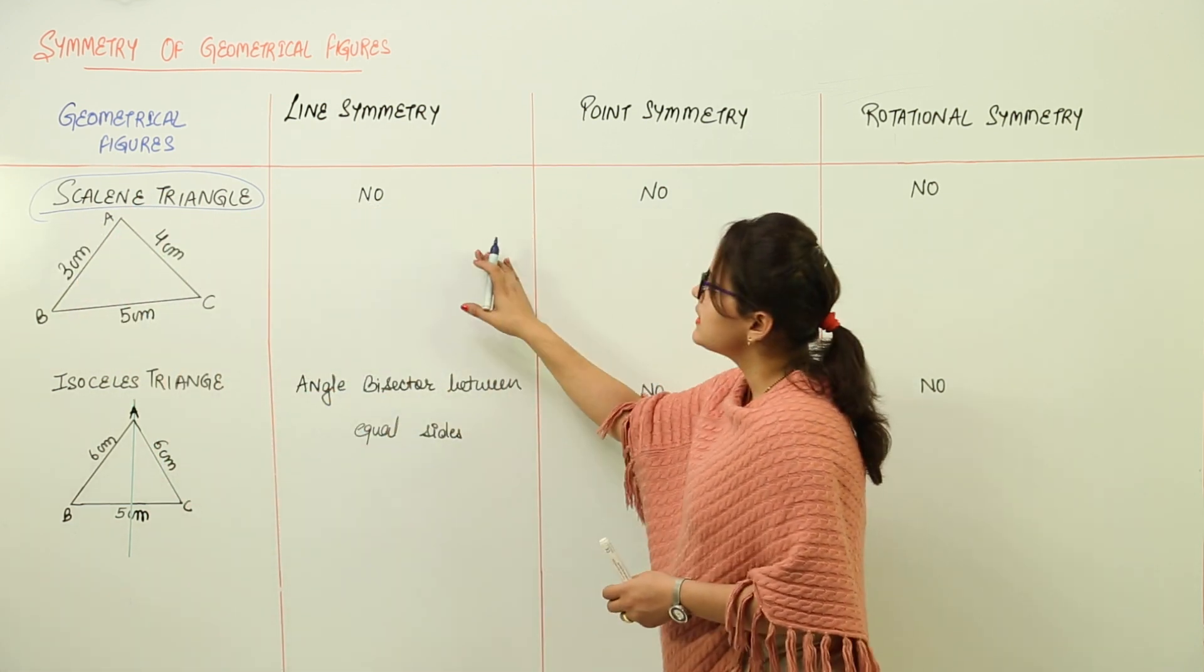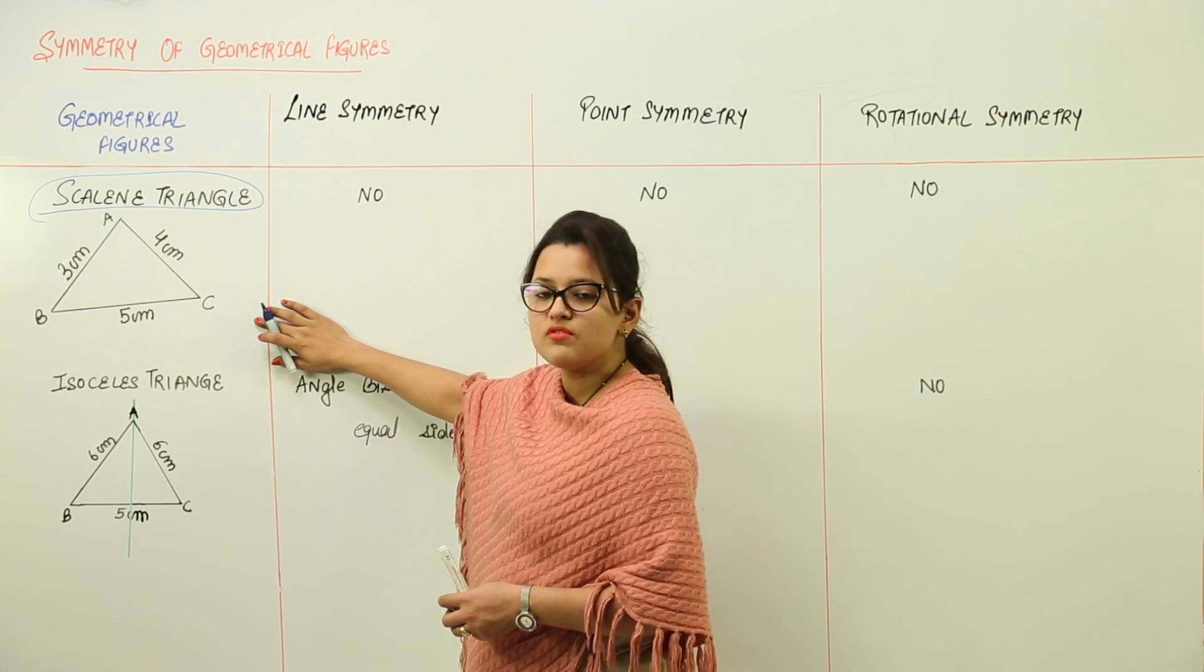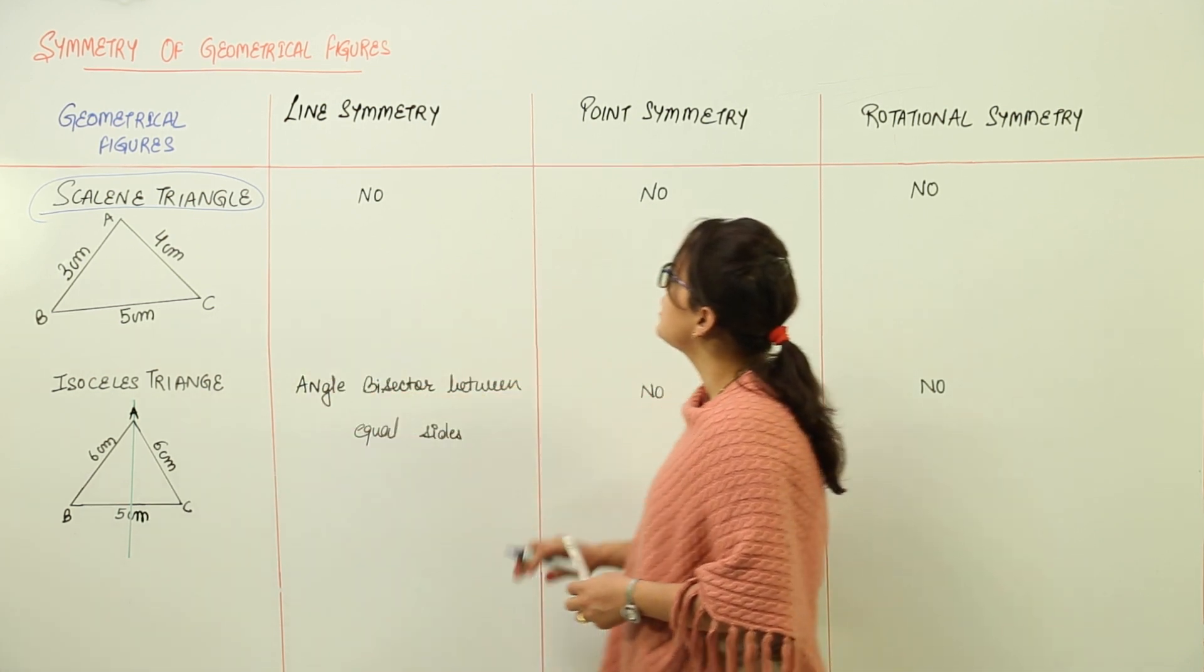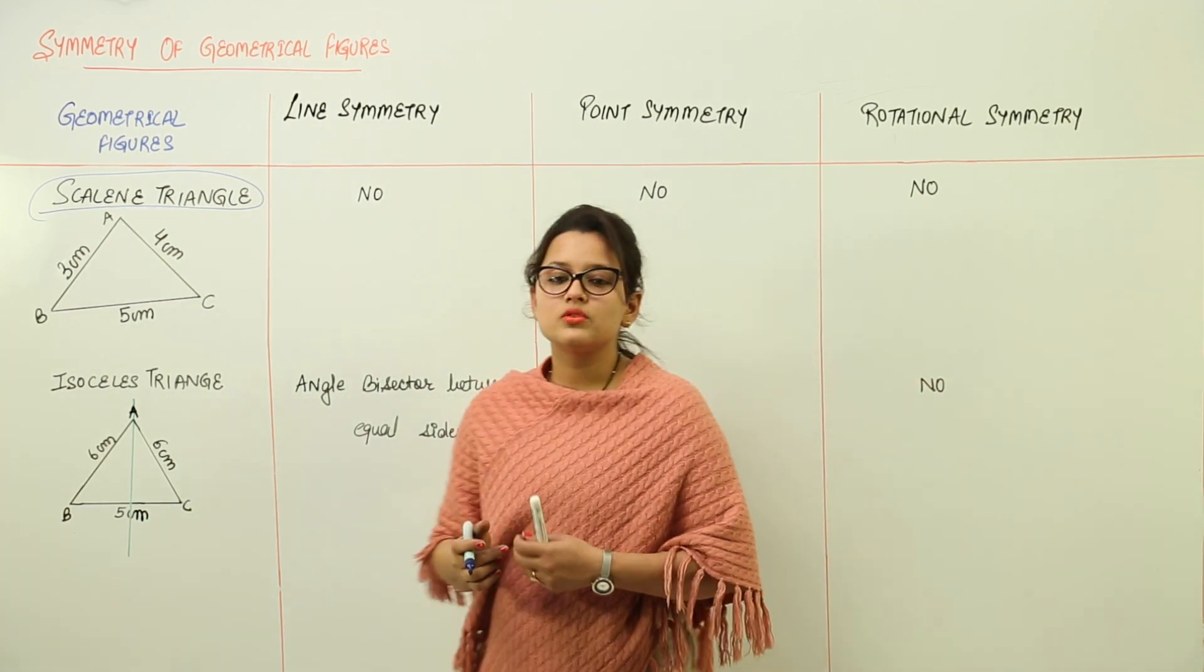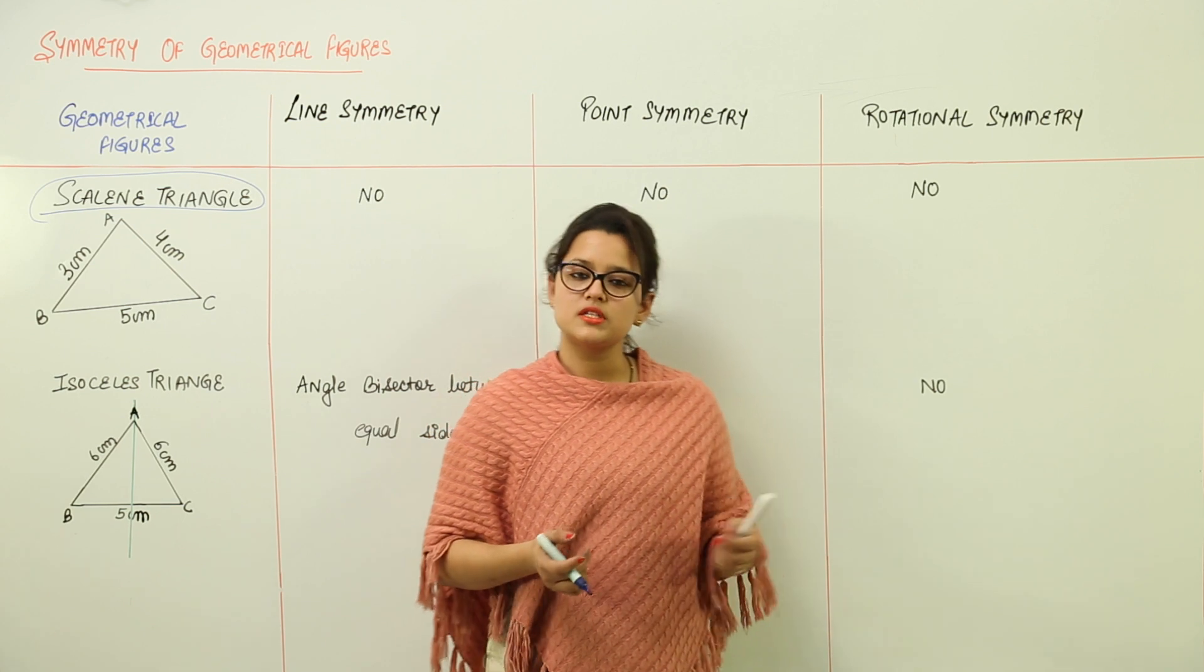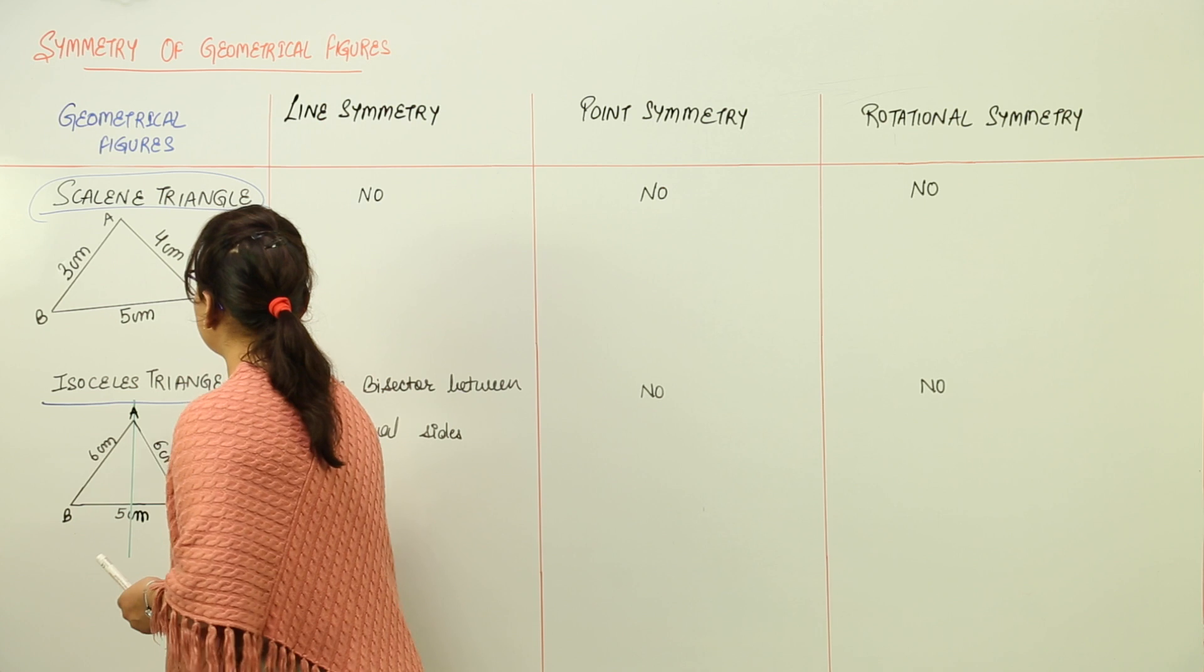So what about the line symmetry for scalene triangle? There is no line symmetry existing for the scalene triangle. We have no point symmetry for scalene triangle, and so that is why we do not have rotational symmetry also for scalene triangles. What about the isosceles triangle?